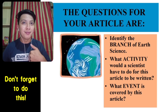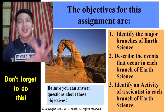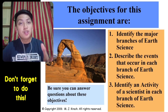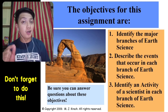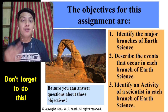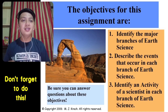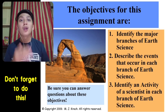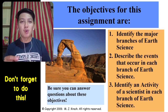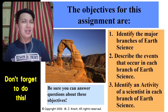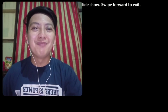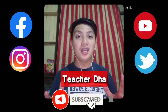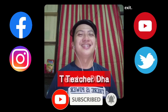The objectives for this lesson are: Number one, identify the major branches of earth science. Number two, describe the events that occur in each branch of Earth and Space Science. Number three, identify the activity of a scientist in each branch of earth science. Be sure you can answer questions about these objectives. This is Mr. Dariel Del Mundo — don't forget to like, share, and subscribe to the channel. See you guys!